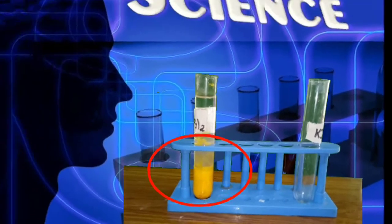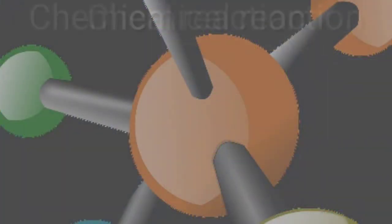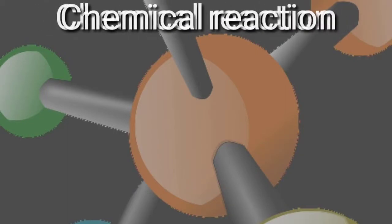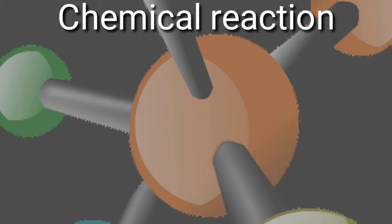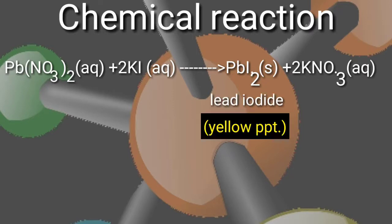Chemical reaction involved here: aqueous solution of lead nitrate reacts with aqueous solution of potassium iodide and it will form lead iodide that is having yellow precipitate and potassium nitrate.